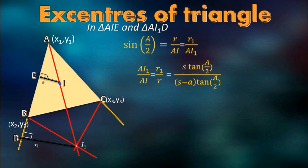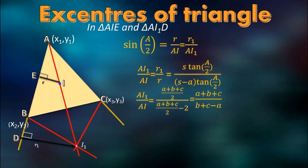If you are confused about it, please refer to the properties of triangle. If we cancel out the tan term and expand S, we will get AI1 by AI as (A+B+C)/2 divided by (A+B+C)/2 minus A, which equals (A+B+C)/(B+C-A).